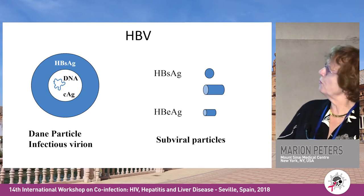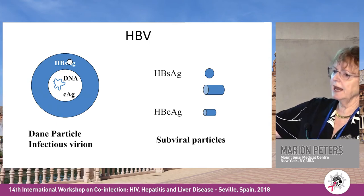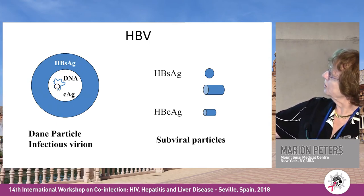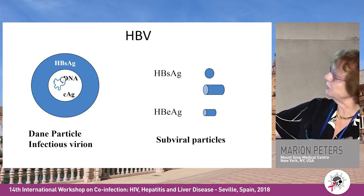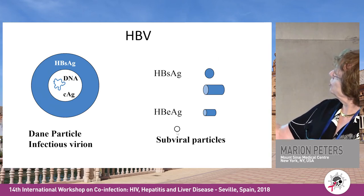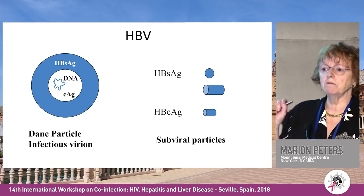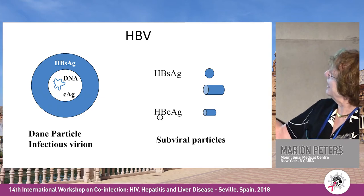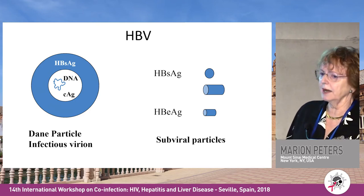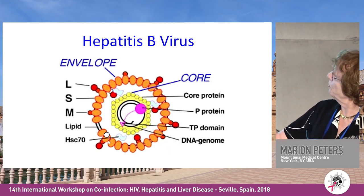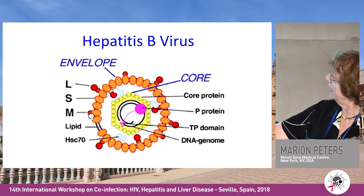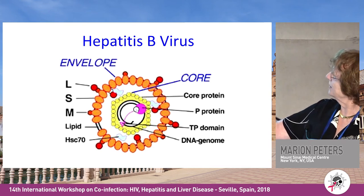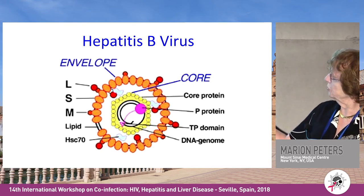When we think about the virus, the Dane particle surface antigen is the envelope, and inside is the core antigen plus the partially double-stranded DNA. Surface antigen and E antigen also produce subviral particles from an alternative transcription in the liver. E antigen is not the envelope — it is an extra subviral particle and is not part of the infectious virion. Inside the core protein is the polymerase, where all of our drugs now target.